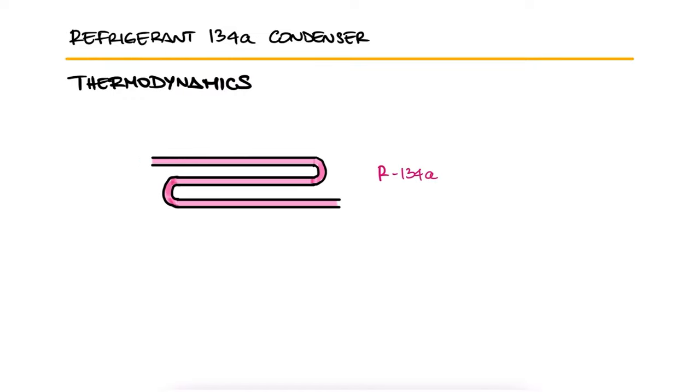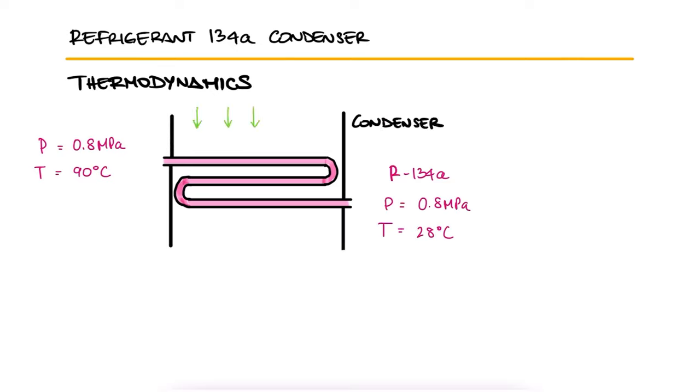Refrigerant 134A at 0.8 MPa and 90 degrees Celsius is to be cooled to 0.8 MPa and 28 degrees Celsius in a condenser by air.